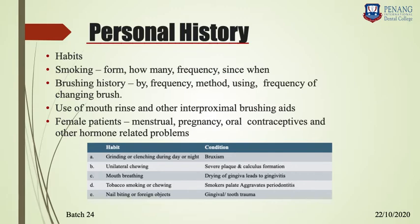The frequency of brushing will determine how clean the oral cavity is. The method used tells you how the gingiva will be affected — for example, if a patient uses a hard toothbrush with aggressive horizontal brushing motion, you can expect gingival recession or cervical abrasions. This history helps guide you to a proper diagnosis.